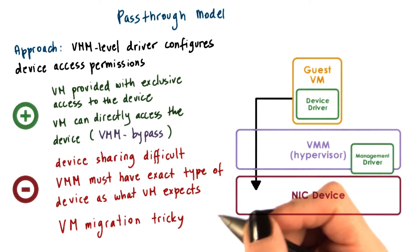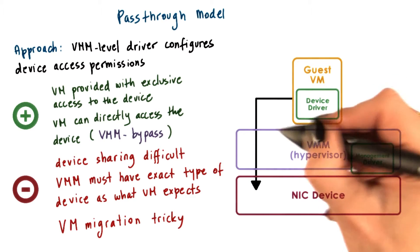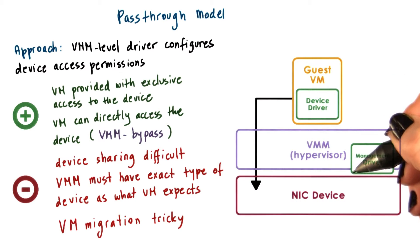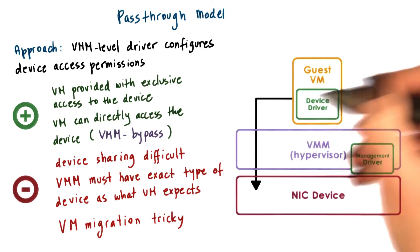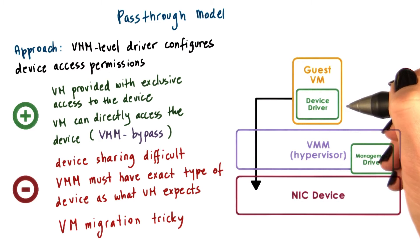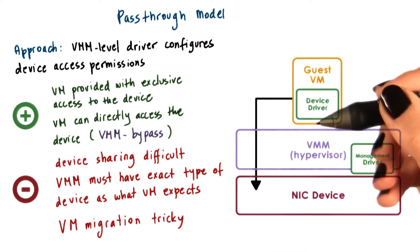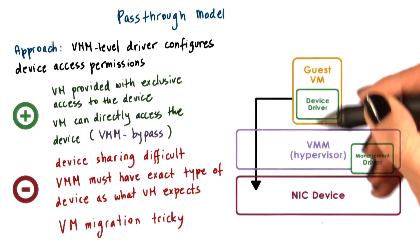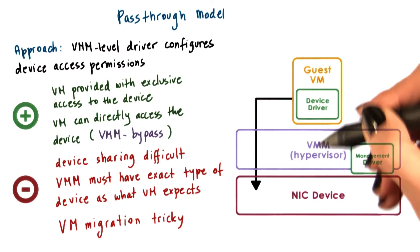Also, we mentioned that one of the benefits of virtualization is that the guest VMs are decoupled from the physical hardware, and therefore we can migrate them easily to other nodes in the system. Well, this pass-through really breaks that decoupling because it directly binds a device to a VM.